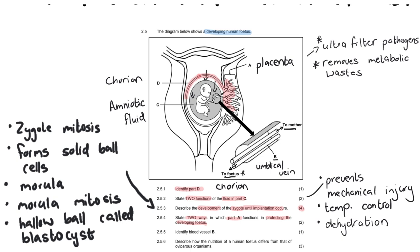Moving on to our next question, 2.255, identify blood vessel B. We've already done that. It is the umbilical vein. Very often people will get that one wrong.